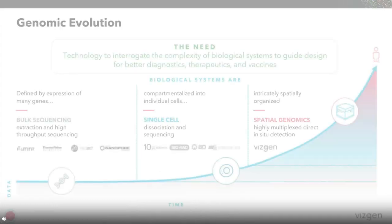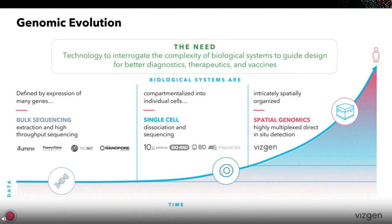As many of us know, biological tissues are very complex and made of many different cell types that express genes very differently. Understanding that gene expression profile within each cell and across the tissue is very critical for better understanding of the biological system. Over the past two or three decades, we have seen a revolution in genomics research, which really enables us to characterize different biological systems at unprecedented scale and resolution — from bulk RNA sequencing to single cell sequencing. We can now interrogate the gene expression profile of individual cells and really use this information to understand cell composition and cell-cell interactions.